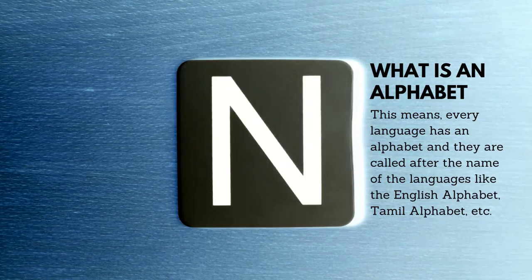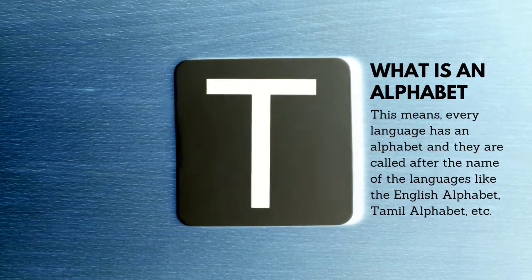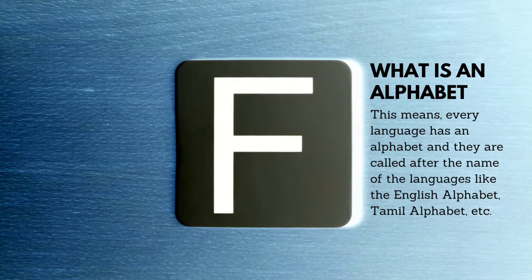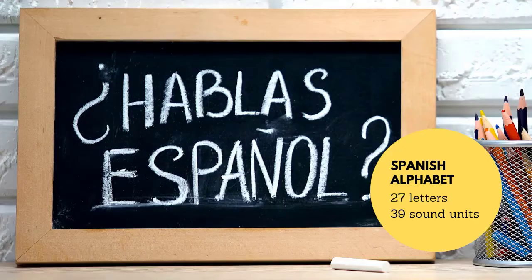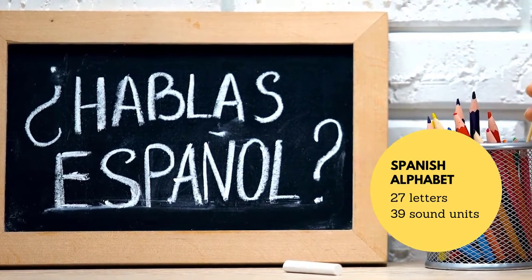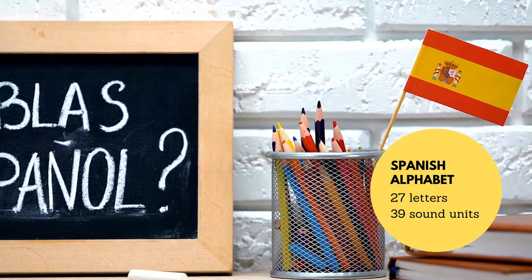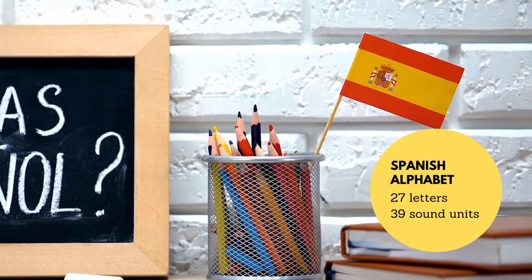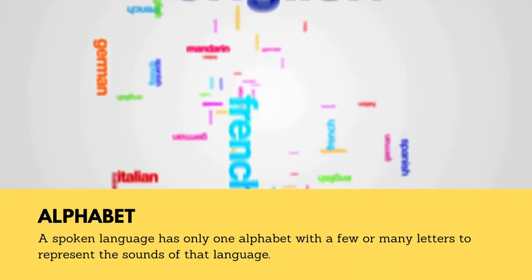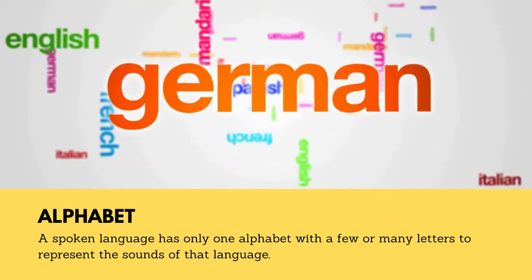Every language has an alphabet, and they are called after the name of the language — like the English alphabet, Tamil alphabet, Spanish alphabet, etc. Spanish is a language spoken by the people in Spain and Latin American countries as their mother tongue. In the modern Spanish alphabet, there are 27 letters that represent at least 39 unique sounds. So remember that a spoken language has only one alphabet with a few or many letters to represent the sounds of that language.